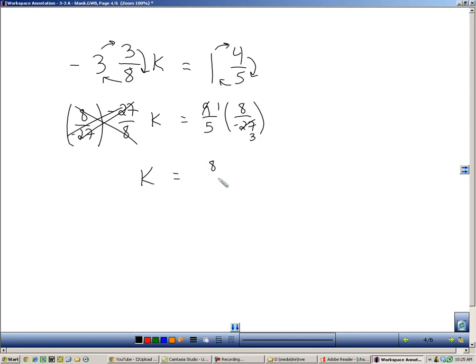8 times 1 is 8, 5 times 3 is 15, with a negative, because a negative times a positive is a negative. So in this case you end up with negative 8 over 15. And you can do that when you're multiplying a variable by a fraction, you can multiply by its reciprocal. Take the fraction and flip it.